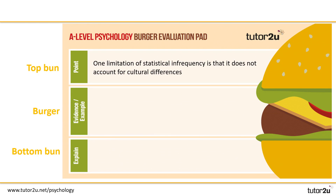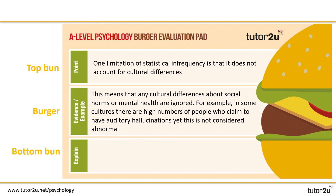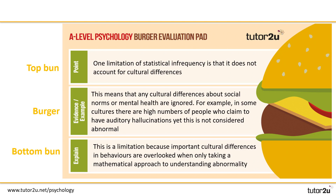Point two was about not accounting for cultural differences. Hopefully you were able to think about the types of cultural differences that shouldn't be ignored. This means that any cultural differences about social norms or mental health are ignored — for example, in some cultures there are high numbers of people who claim to have auditory hallucinations, and yet this is not considered abnormal. Then finish off with why this is a limitation, and hopefully you were able to add something to conclude your point yourself.